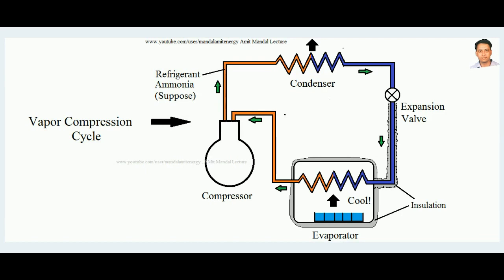Vapor absorption cycle is a refrigeration cycle in which there is no need of a compressor. To refresh you, vapor compression cycle consists of four main components: the compressor, the condenser, the expansion valve, and the evaporator. The job of the compressor is to compress the refrigerant — here, ammonia — and send it to the condenser.